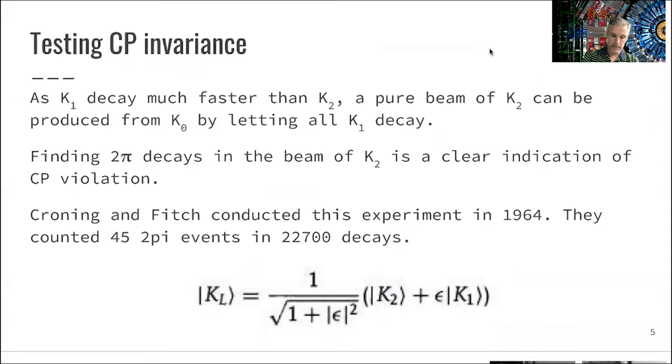That means that this K-long beam, the long-lived kaon beam, is actually an admixture of K2s with a small additional component of K1s. Here they observed CP violation through the mixture of those states. This epsilon gives you a size of the strength of the CP violation.